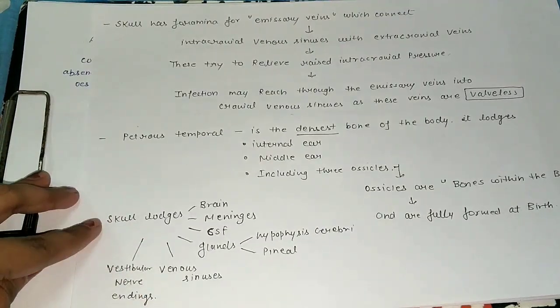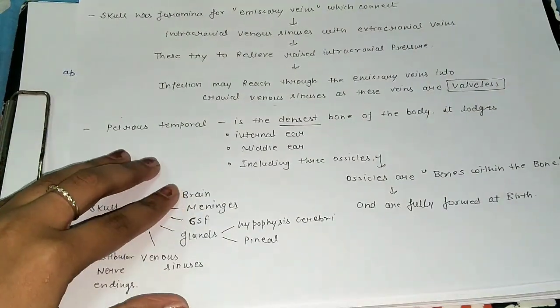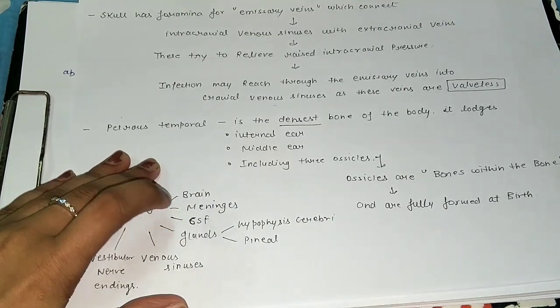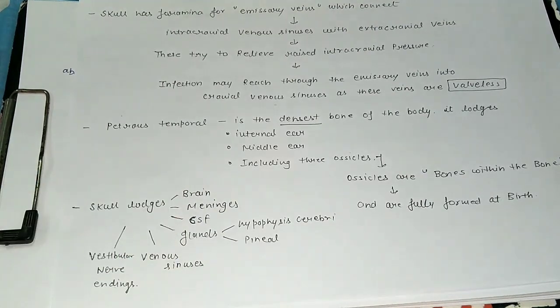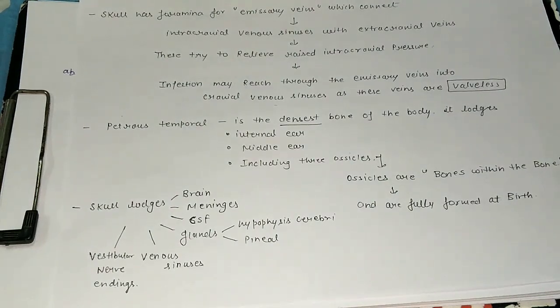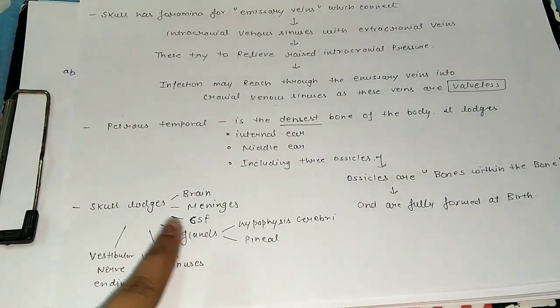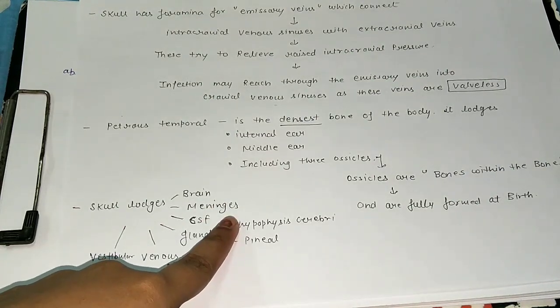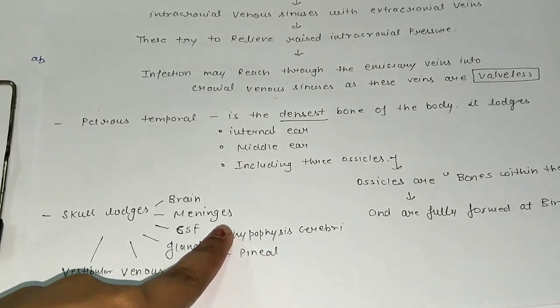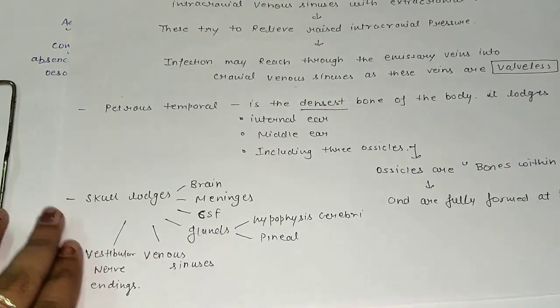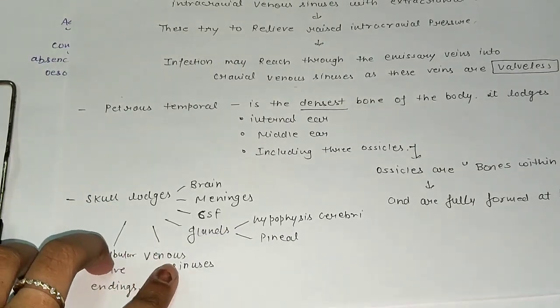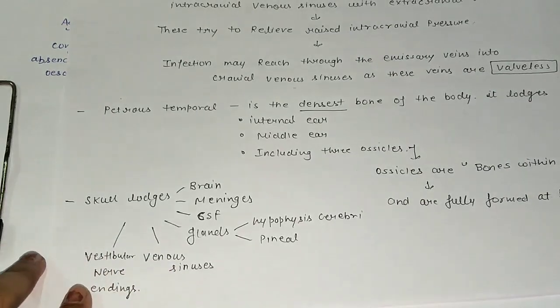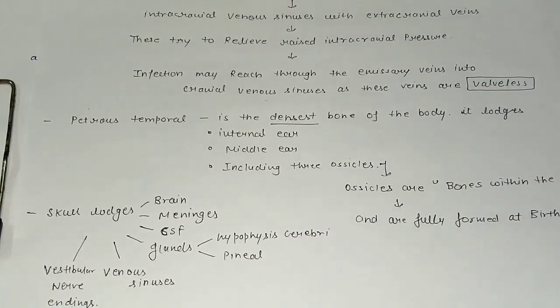The skull lodges the brain. The most important brain covering is the meninges. There is CSF, which means cerebral spinal fluid, which we call the lymph of the brain. And there are glands: the hypothalamus, which we call hypophysis cerebri, and the pineal gland. There are also venous sinuses, which I have already told you about - intracranial venous sinuses. And vestibular nerve endings. These are all the things inside our skull.